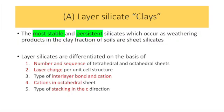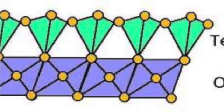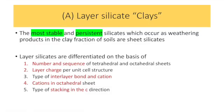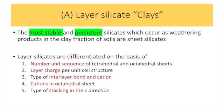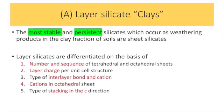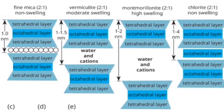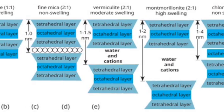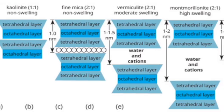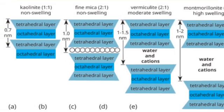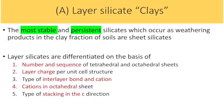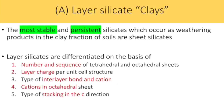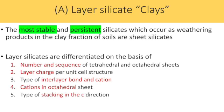Reactivity of soil colloids is due to their charge and surface area. The first colloidal soil fraction is the layer silicate clays. They are the most stable and persistent silicates, occurring as weathering products in the clay fraction of soils, and are called sheet silicates. They differ on the basis of number and sequence of tetrahedral and octahedral sheets, layer charge per unit cell structure, type of interlayer bond and cation, cations in the octahedral sheet, and type of stacking in the C direction.